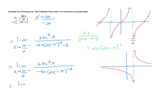Rewriting: the negative 40 stays in the denominator, (2x minus pi) squared moves to the numerator, and cosine squared of x goes into the denominator — since secant squared is 1 over cosine squared. Now if we plug in pi over 2, the numerator is 0 and the denominator is also 0 since cosine of pi over 2 is 0. So we have a 0 over 0 form and must apply L'Hôpital's rule again.